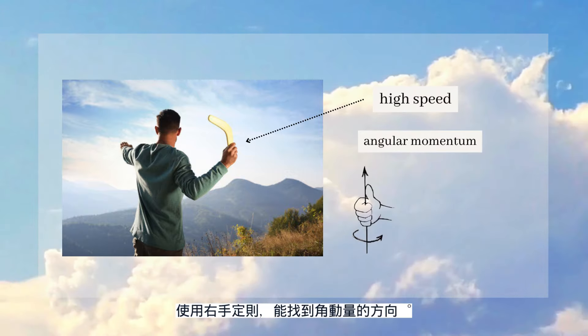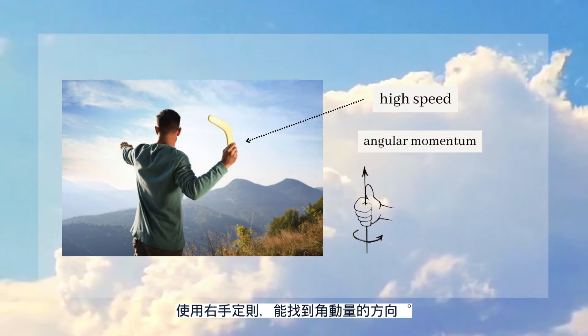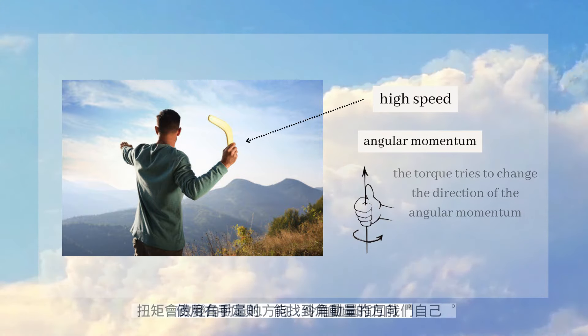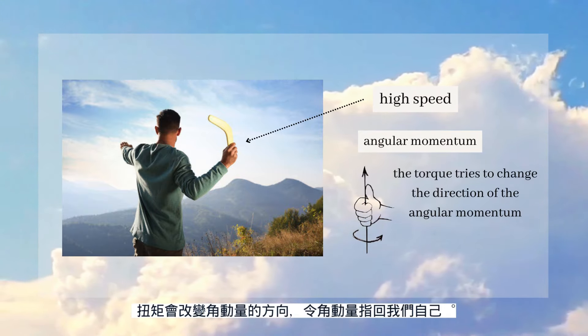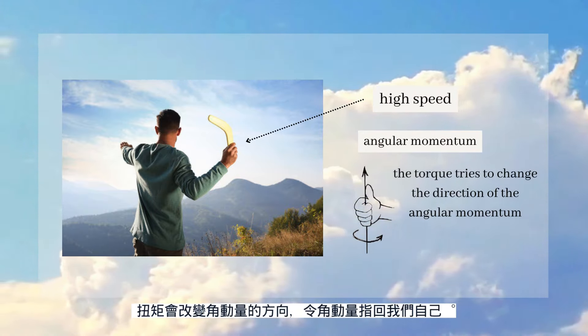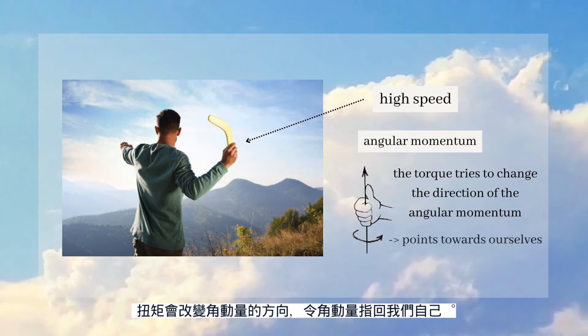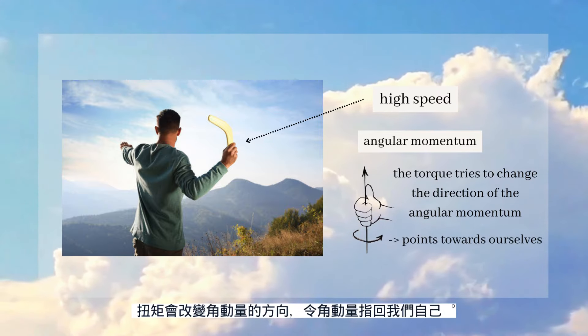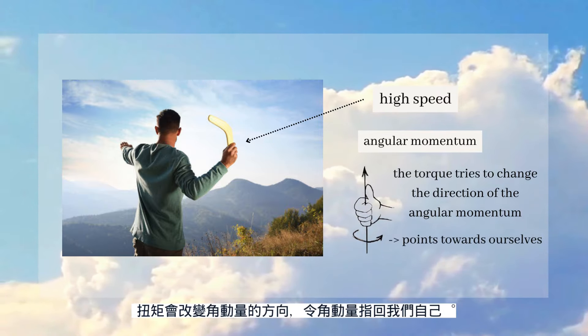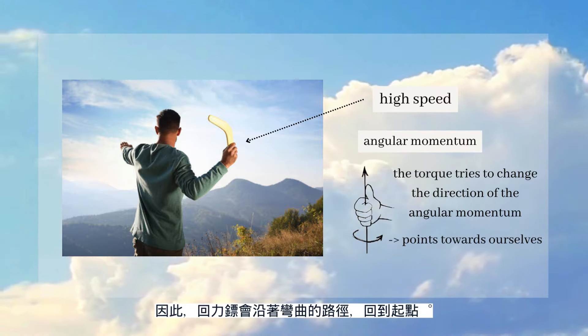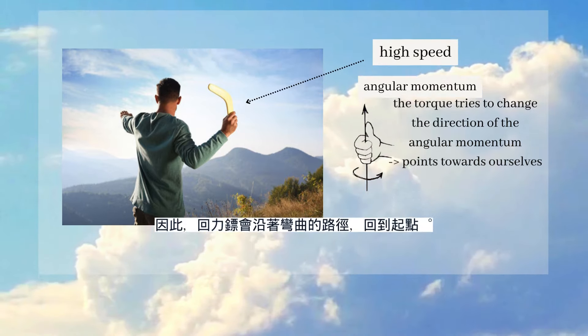If we use the right-hand rule, we can find its direction. When the boomerang is spinning, the torque tries to change the direction of the angular momentum and points towards ourselves, so the boomerang follows a curved path and returns to where it first started.